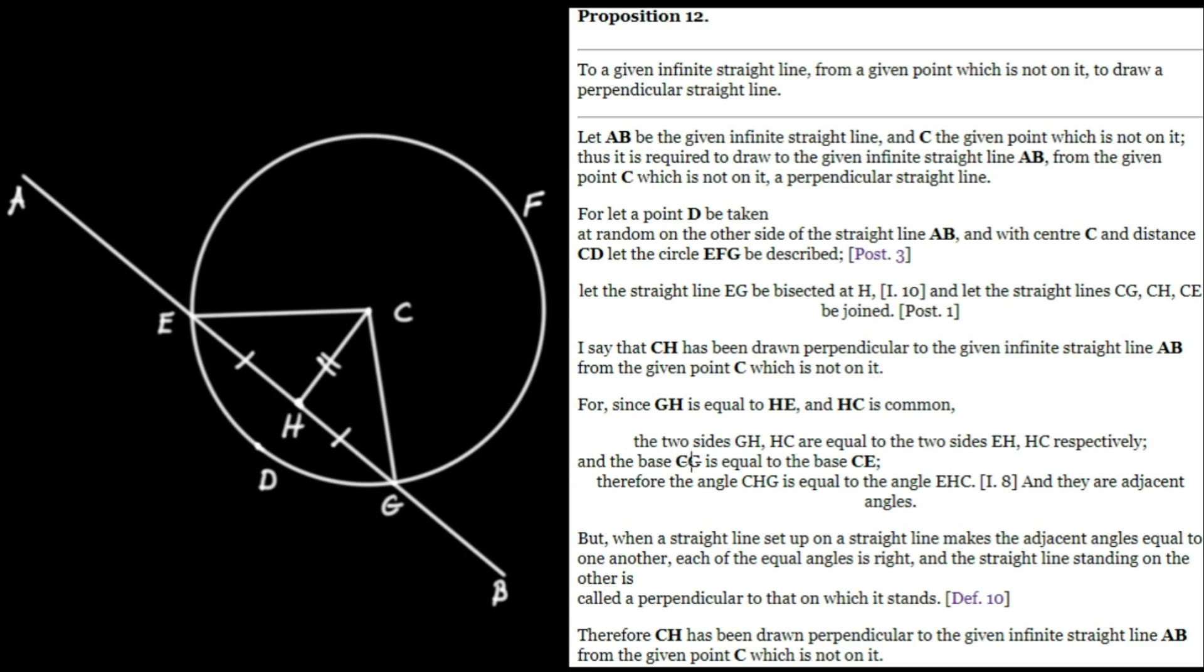And the base CG is equal to the base CE. He's saying that CG is equal to the base CE. Why is that true? Notice these are both radii of the same circle. G and E are both points on the circumference of the circle.